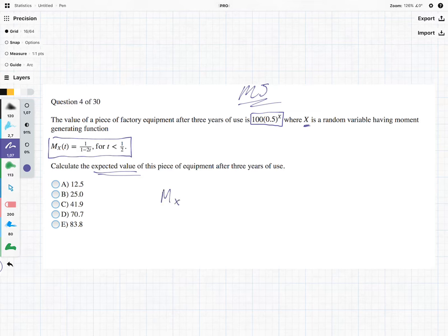So we would have learned in this course that the moment generating function is given by the following. It's the expected value of e to the tx. Okay,